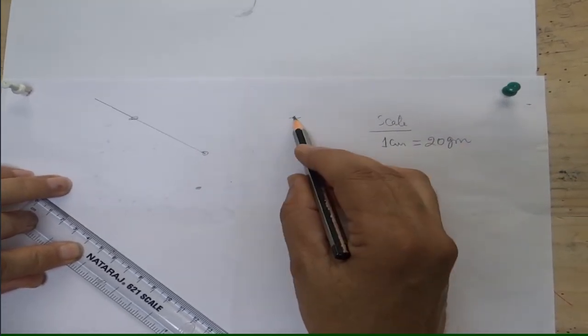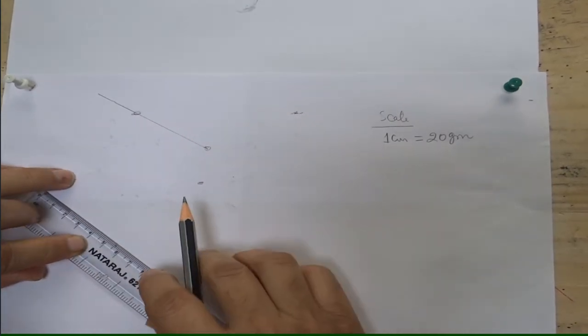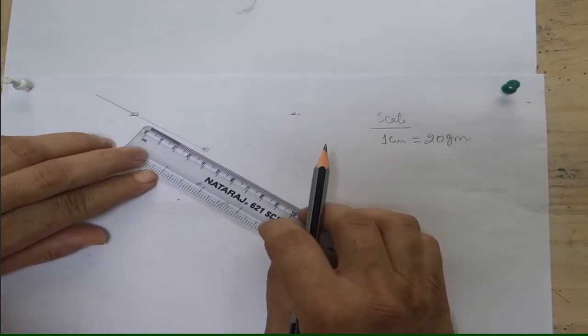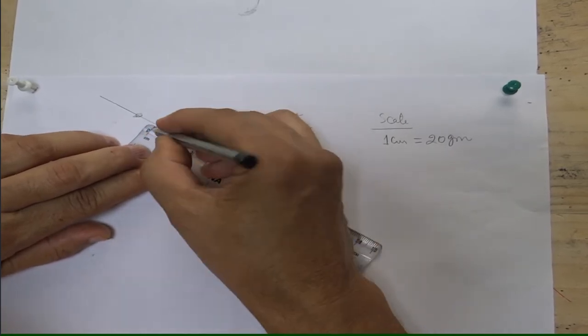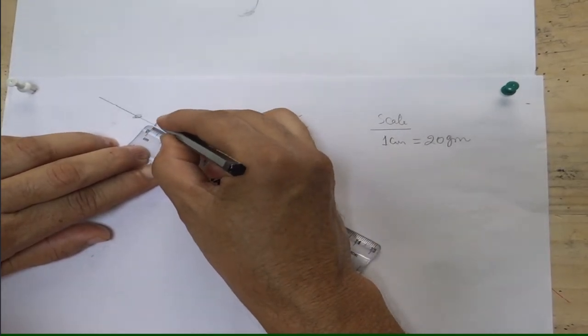So this was 70 grams. This was 70 grams. So the length of the line segment will be 3.5. So 3.5 we will mark in the same direction. This is the point marked 3.5.